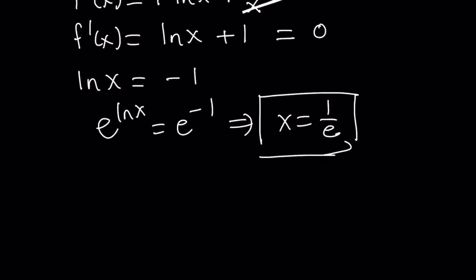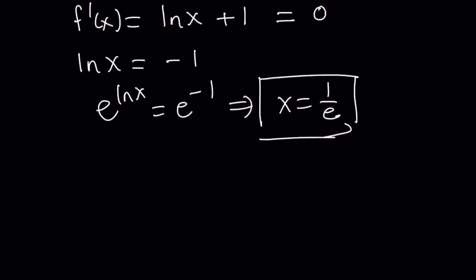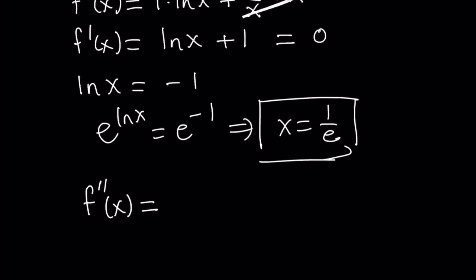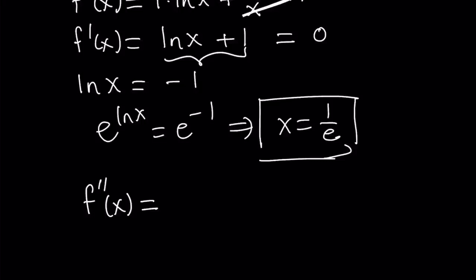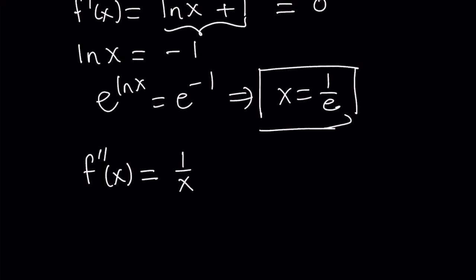The reciprocal of e is about 2.7, so 1 over e is going to be less than 0.4 — somewhere around 0.2, a small number between 0 and 1. Now, does f have a minimum or maximum at this point? I'll use the second derivative test. The second derivative is the derivative of f prime, so differentiating ln x plus 1 gives 1 over x, since the derivative of 1 is 0.